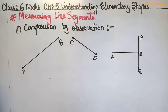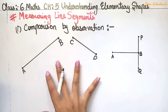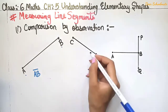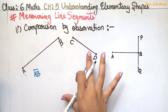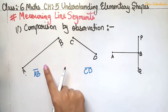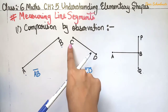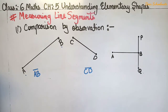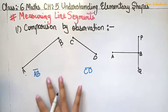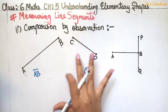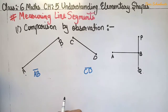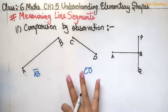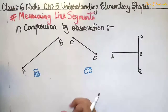The very first method to measure a line segment is comparison by observation — just by seeing. Here we have two line segments, AB and CD. By mere observation we can see that AB is the bigger line segment and CD is shorter than AB. For example, AB may be 10 or 12 cm, and CD may be 8 or 7 cm.